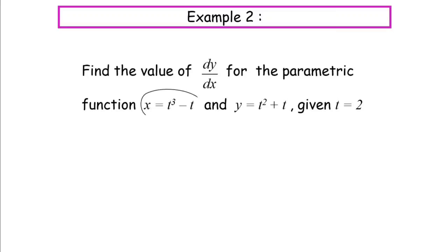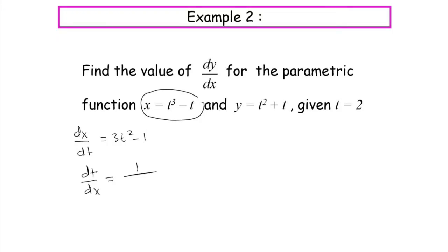First, I am going to find dx/dt. So our dx/dt is equal to 3t squared minus 1. And we need our dt/dx, so to find dt/dx we just find the reciprocal, which gives us 1 over 3t squared minus 1.